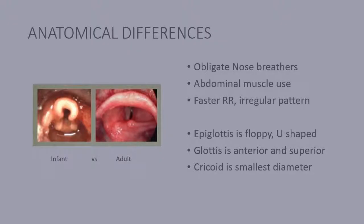There are distinct anatomical differences between the infant and the adult airway. Infants are obligate nose breathers — they only breathe through their mouth if it's already open, like when they're crying. They have to use their abdominal muscles and their intercostal muscles to breathe because their diaphragm is underdeveloped. They normally have a faster respiratory rate and an irregular respiratory pattern because their neuromuscular system is immature.